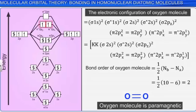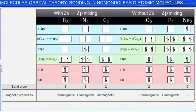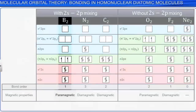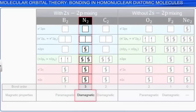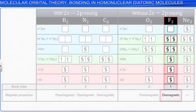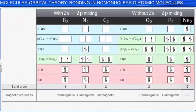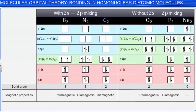Similarly, the electronic configurations of other homonuclear diatomic molecules such as boron, nitrogen, fluorine, and neon are shown here, from which bond order and magnetic property can be calculated as given in the table.